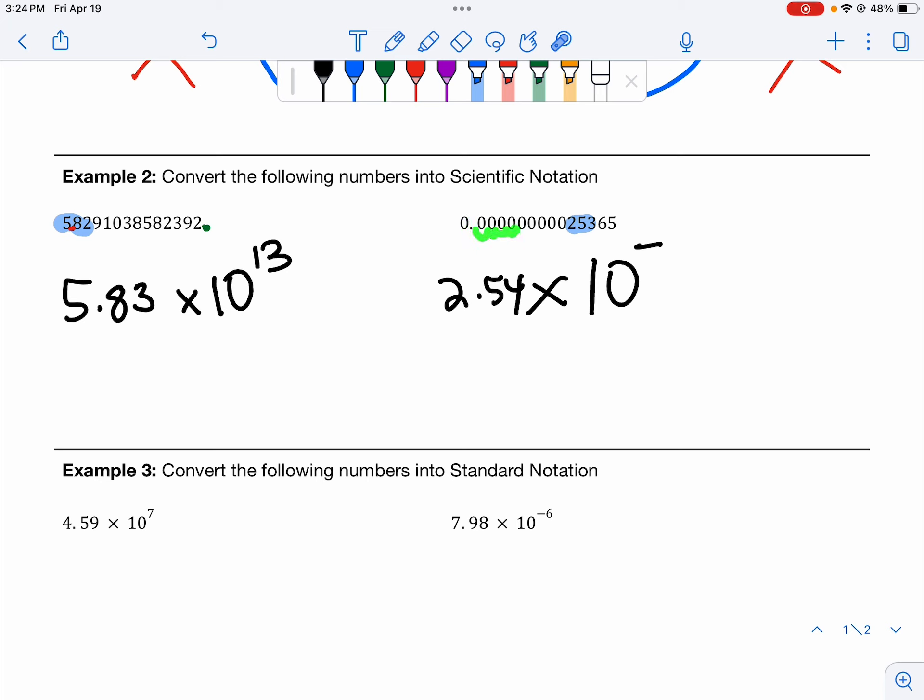1, 2, 3, 4, 5, 6, 7, 8, 9, 10. 2.54 times 10 to the negative 10th.